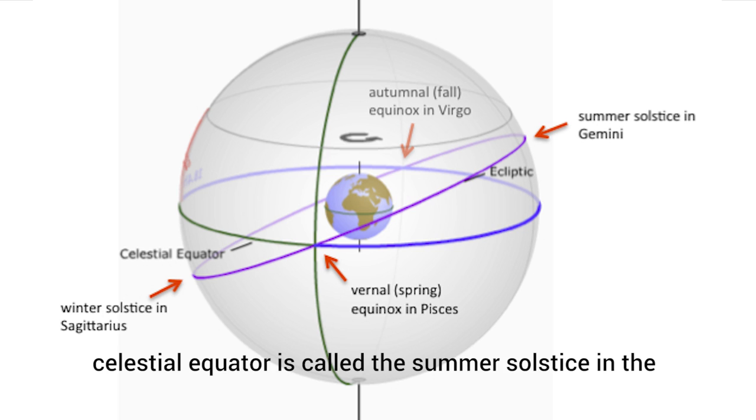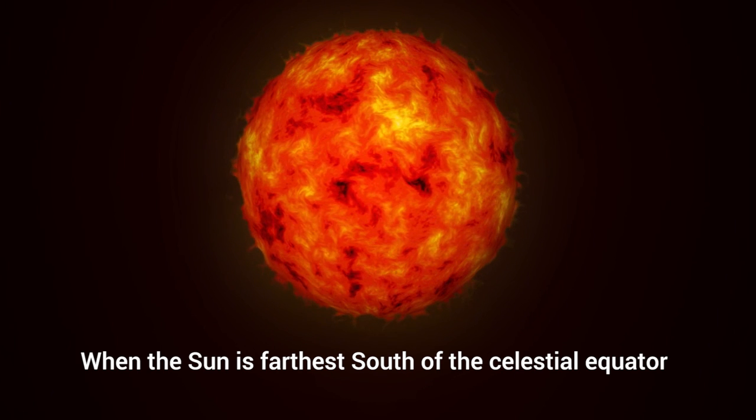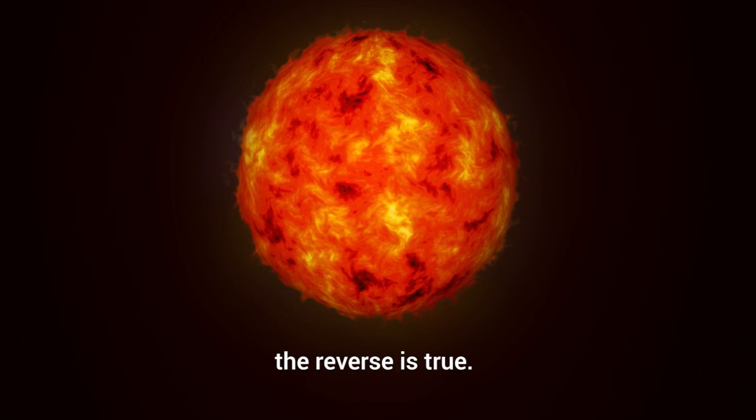The point on the ecliptic that is farthest north of the celestial equator is called the summer solstice in the northern hemisphere and the winter solstice in the southern hemisphere. When the Sun is farthest south of the celestial equator, the reverse is true.